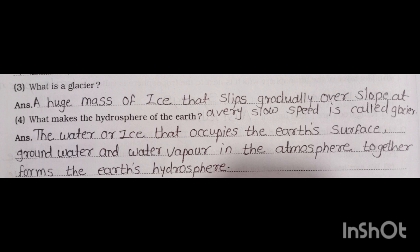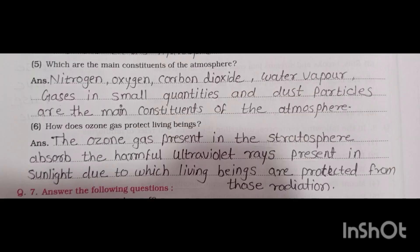Fourth, what makes the hydrosphere of the earth? The water or ice that occupies the earth's surface, groundwater, and water vapor in the atmosphere together form the earth's hydrosphere. Fifth, which are the main constituents of the atmosphere? Nitrogen, oxygen, carbon dioxide, water vapor, gases in small quantities, and dust particles are the main constituents of the atmosphere.